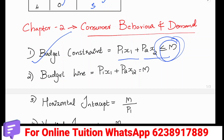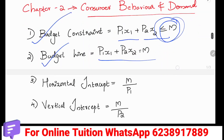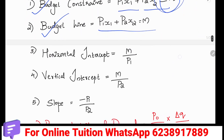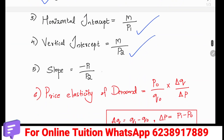Then the budget line equation: P1x1 plus P2x2 is equal to m. The horizontal intercept equation is M divided by P1. The vertical intercept equation is M divided by P2. The slope equation is minus P1 by P2.